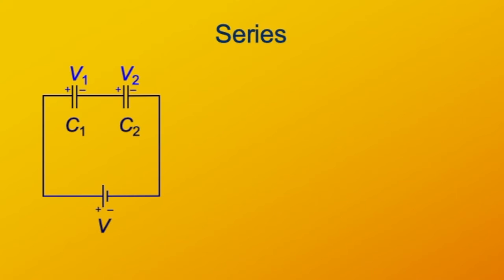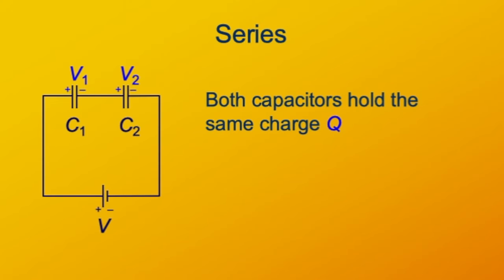What about series? From Kirchhoff's voltage law, we understand that the voltage around the loop adds to zero. So the voltage drop across capacitor one and the voltage drop across capacitor two have to add up to the total voltage drop across both of them together. By Kirchhoff's current law, both capacitors have to hold the same charge, because whatever current goes into one capacitor and accumulates a charge has to also go into and out of the other capacitor. So the charges are the same.